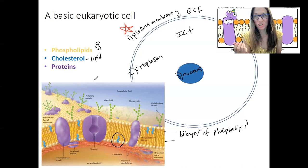Then we have proteins. They are very important. Proteins are the purple blobs shown here — they're not really blobs in real life. I'll go over a couple of general types on the next slide. We'll talk a lot about the proteins because they determine the function of the plasma membrane — what it can do, what it can communicate, what it can let in.